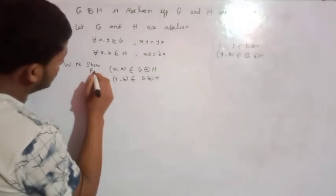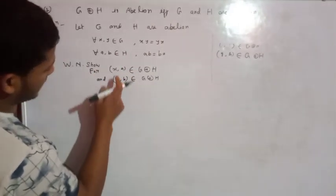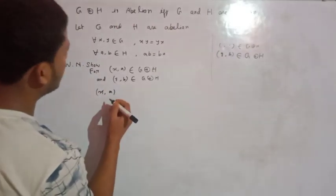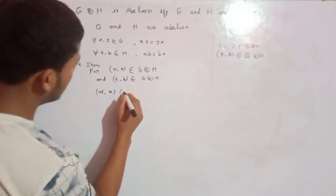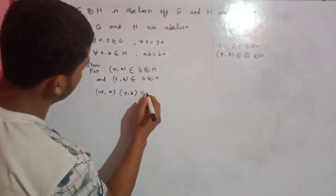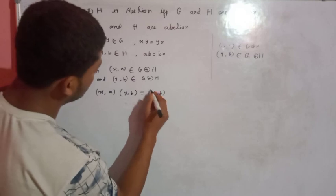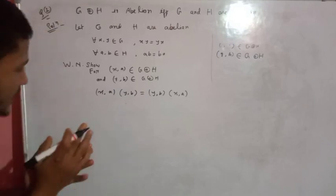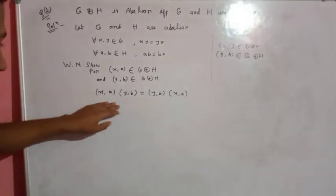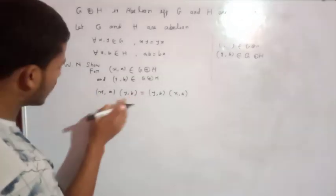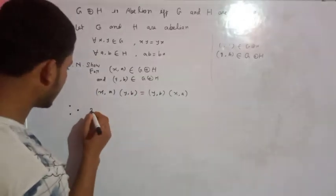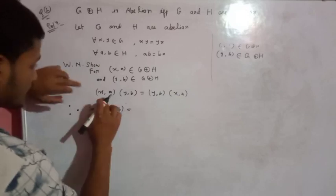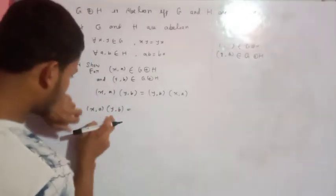We need to show that for two elements (x, a) and (y, b) in Z external direct product H, we have (x, a)(y, b) is equal to (y, b)(x, a).